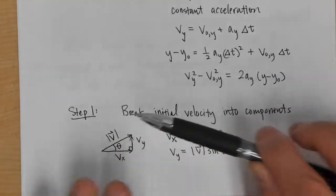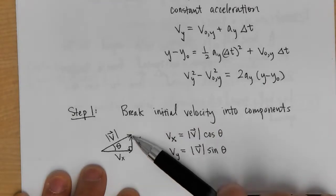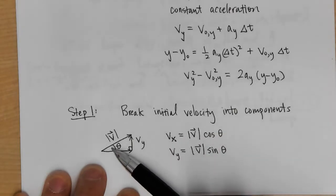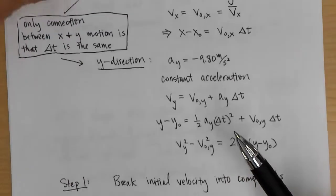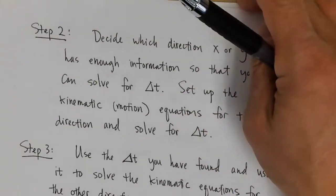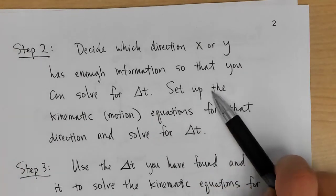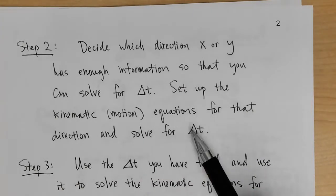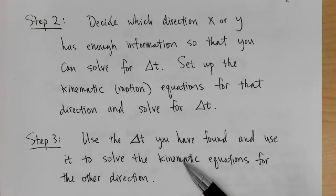The recipe for solving projectile problems: first, break the initial velocity into components. vx = v·cos(θ), where θ is the angle from horizontal, and vy = v·sin(θ). Next, decide which direction has enough information to solve for Δt, set up the kinematic equations for that direction, and find Δt. Then if necessary, use that Δt to solve the kinematic equations for the other direction.